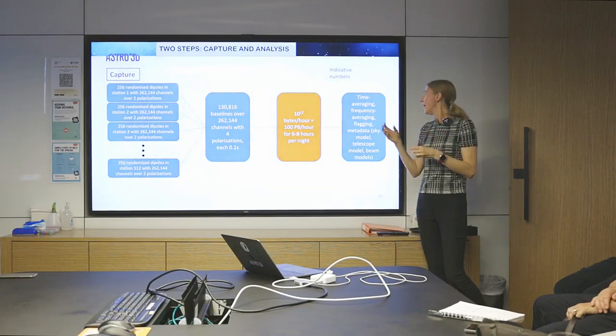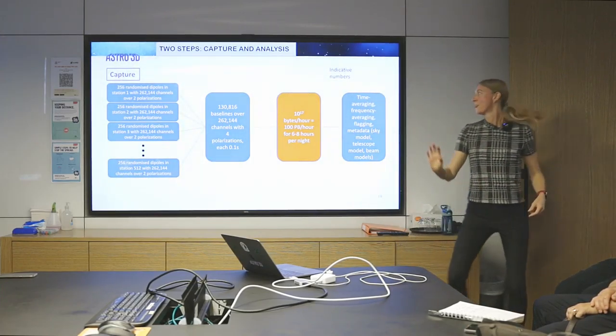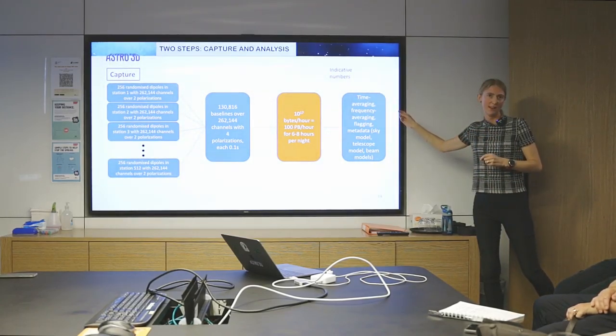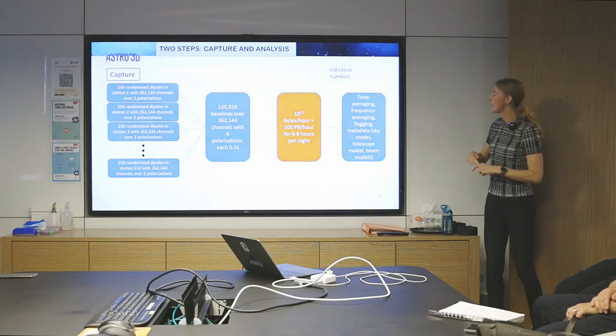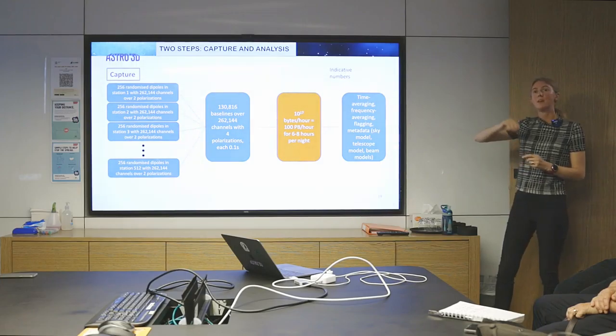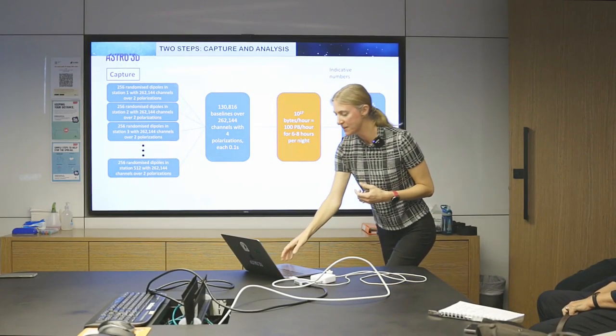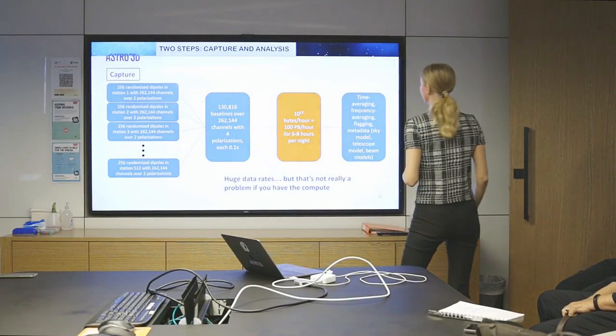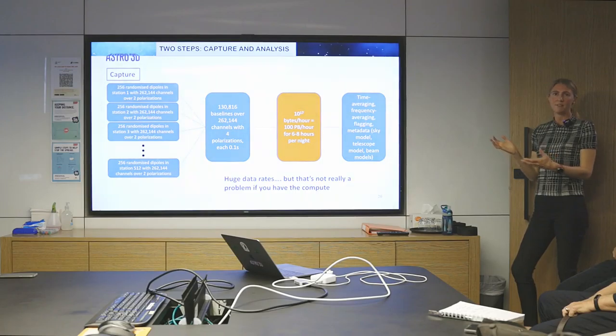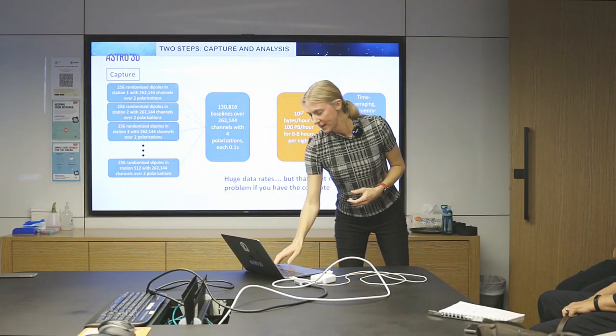So that's just raw numbers. You can't do science with that. That's just too much data. And so the next step is to do some type of time averaging and frequency averaging to try to reduce that data to something that's more manageable to do your science. And the key to that is ensuring that you're not destroying your science information by doing that averaging. The other thing that has to come along with that is the metadata. And this is the real key bit for the next part, which I'm going to call analysis.